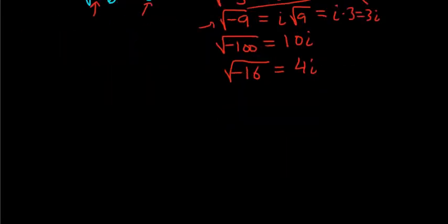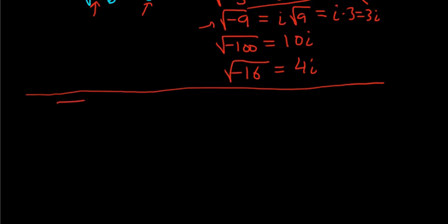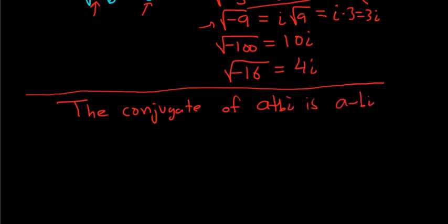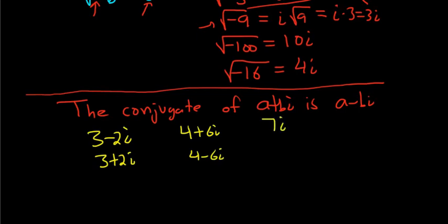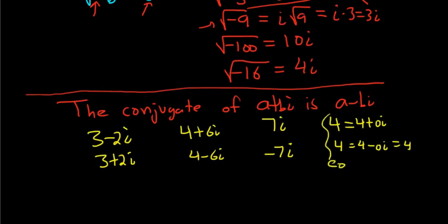Sometimes you have to divide complex numbers, so we need to talk about something called the conjugate. The conjugate of a plus bi is a minus bi. For example, the conjugate of 3 minus 2i is 3 plus 2i. The conjugate of 4 plus 6i is 4 minus 6i. The conjugate of 7i is negative 7i. Since 4 equals 4 plus 0i, the conjugate of 4 is just 4. The conjugate of i is negative i.